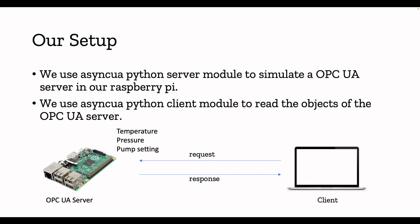In this video I'll clearly explain the setup, and I'll share the GitHub link for the server and client sample code in the description. I'll walk through how the OPC UA server is created, how we model data for temperature, pressure, and pump setting, and how the client sends a request to the server and gets a response — all in real time. If you have a Raspberry Pi, grab it and let's start.